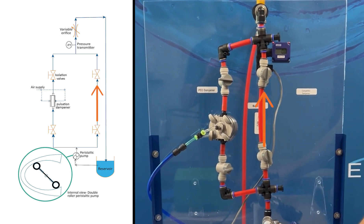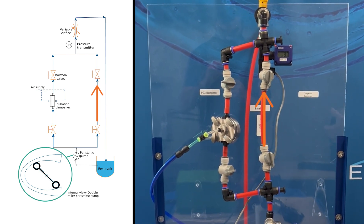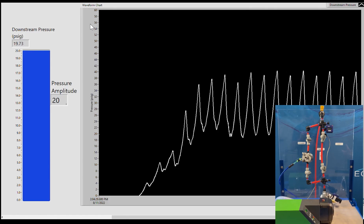We'll start with the base case where we see after the pump generates flow there's a typical amplitude of about 20 psi.